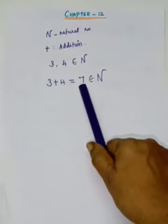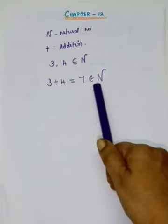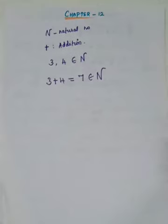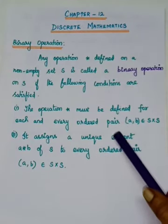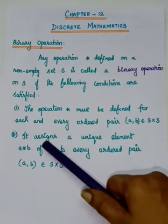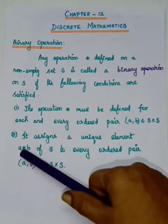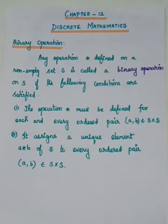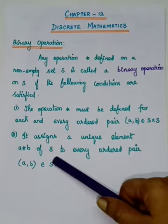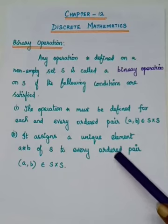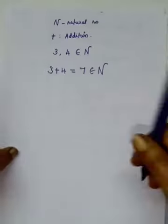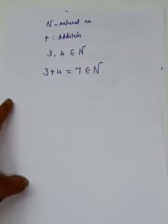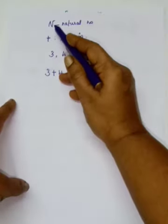For that, take two elements from the set. For example, I will take 3 and 4. So 3 comma 4 belongs to N. You have to apply the operation. Here the operation is plus, so 3 plus 4 equals 7. What is 7? 7 is a natural number.